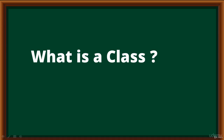What is a class? In programming, a class is a template used to create objects — it defines how something should be laid out or structured, but doesn't fill in the content. For example, a class called 'car' could specify that the car needs to have doors, wheels, and seats, but wouldn't specify the car's name or the exact type of seats or wheels.